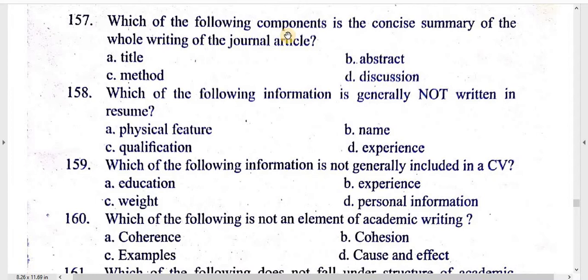Question number 157: which of the following components is the concise summary of the whole writing of the journal article? Title, abstract, method, discussion.